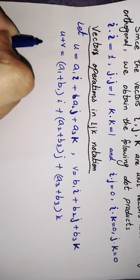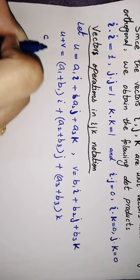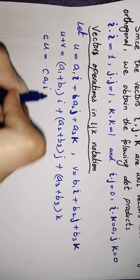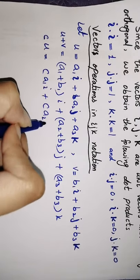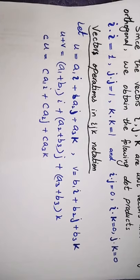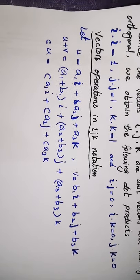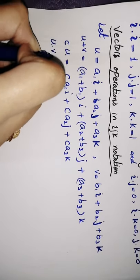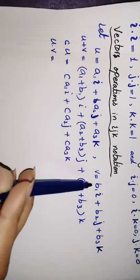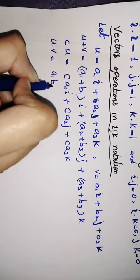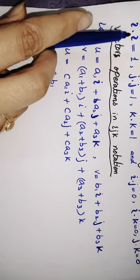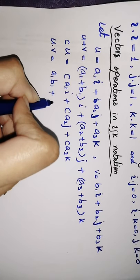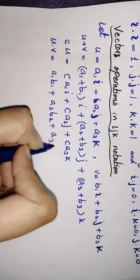We can also define scalar multiplication. Suppose we have scalar c and vector u: c·u equals c·a1·i plus c·a2·j plus c·a3·k. Scalar multiplication is defined in this way. We can also define the dot product: u·v equals a1·b1 plus a2·b2 plus a3·b3, since i·i equals 1 and i·j equals 0.